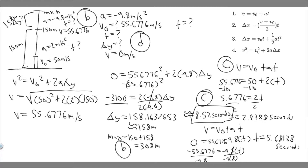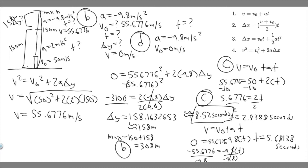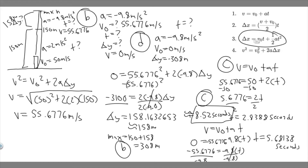For Part D — how long is the rocket in the air total? We know the trip up takes 8.52 seconds. Now we need the time for the rocket to fall back down. On the way down, acceleration is minus 9.8 m/s², initial velocity is 0 (starting from rest at the top), and the change in height is minus 308 meters. Since we have V₀, a, and ΔY, we can use ΔY = V₀t + ½at² to solve for t.